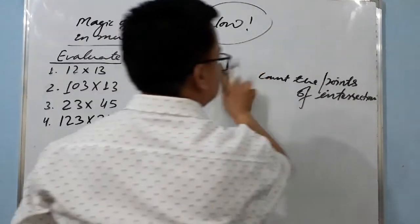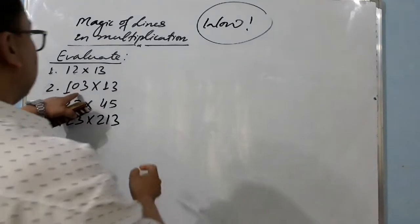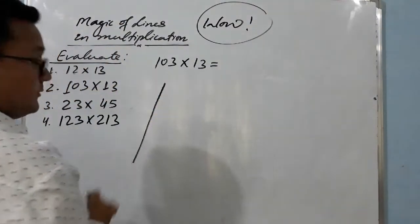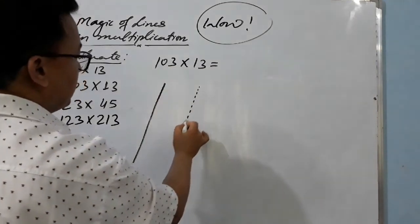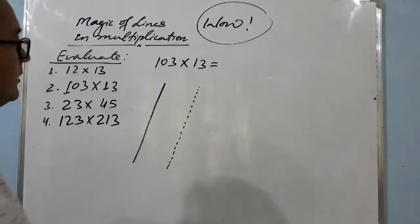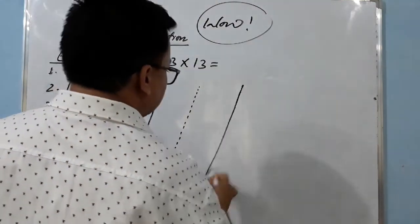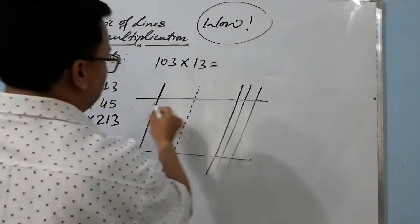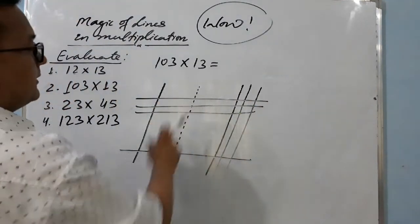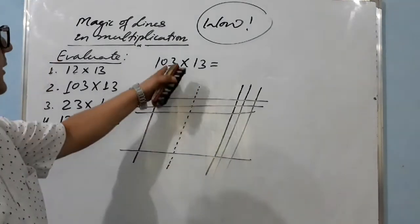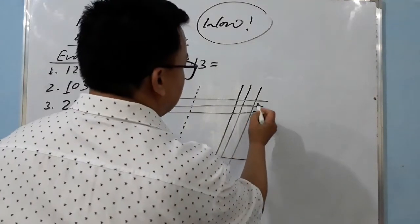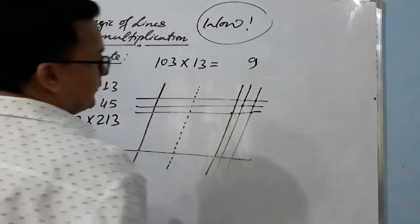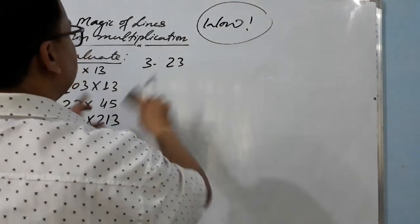Now, what if you have a zero in the number? I'll tell you. Use the same method, but for zero you draw an imaginary line — actually there is no line for zero. Then draw three lines for '3', and one line for '1'. For the imaginary zero, we will not count any points of intersection. Let's count: one, two, three, four, five, six, seven, eight, nine — so the answer is nine.